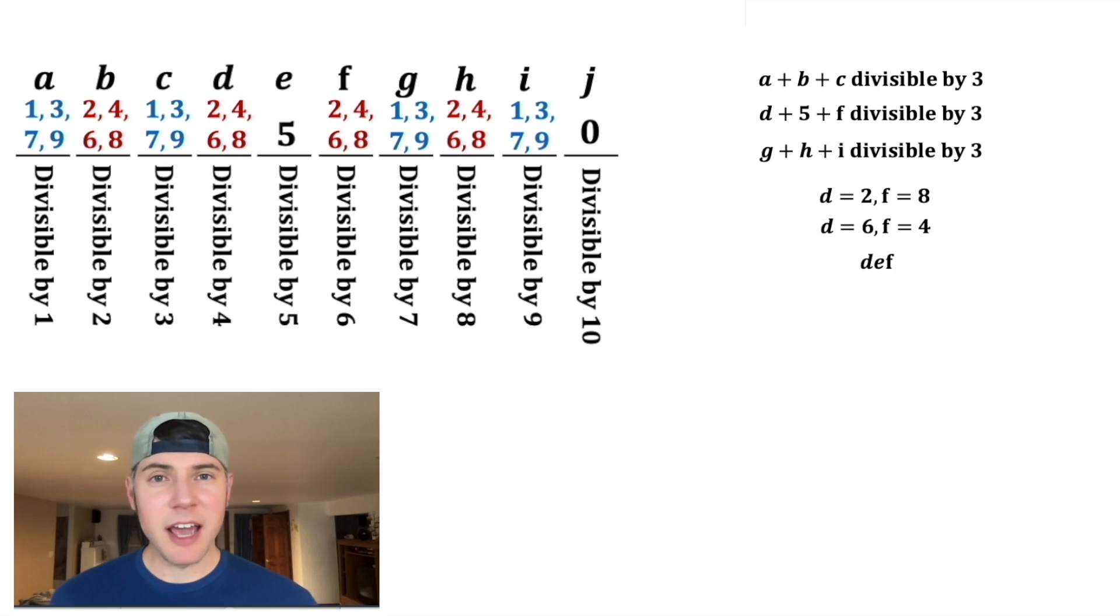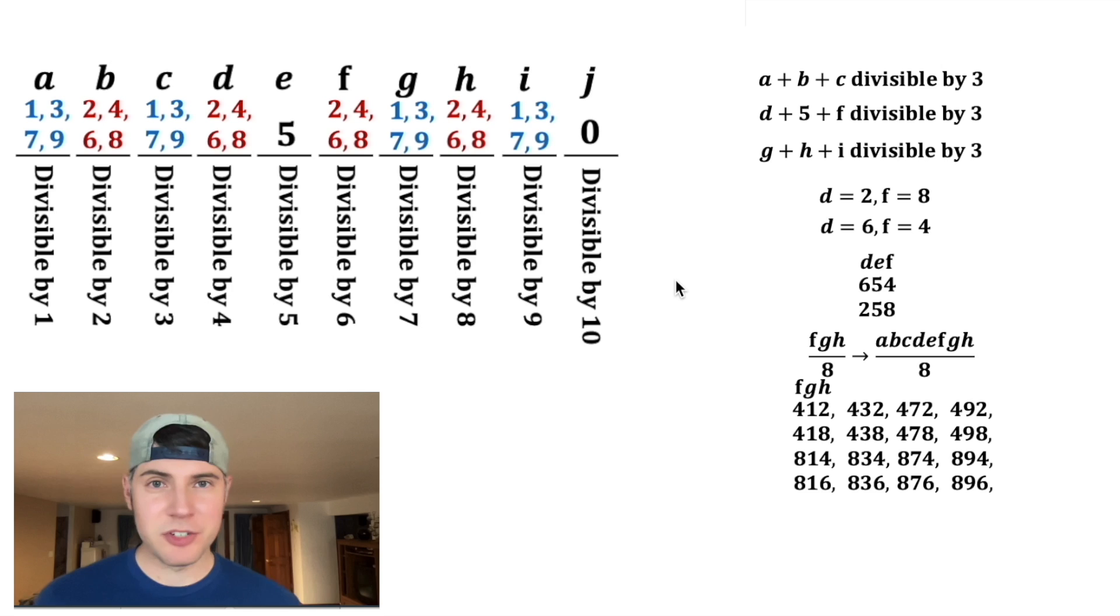So now let's look at D, E, F. We already know that E is 5. And then we know that D can be 6 or 2. And then F would have to be 4 or 8. So these are the only two possible values for D, E, F. Next, let's look at A, B, C, D, E, F, G, H. It must be divisible by 8. Any number that has the last three digits divisible by 8 itself will be divisible by 8. So let's focus on F, G, H. We know that F can only be 4 or 8, but most of these are not divisible by 8.